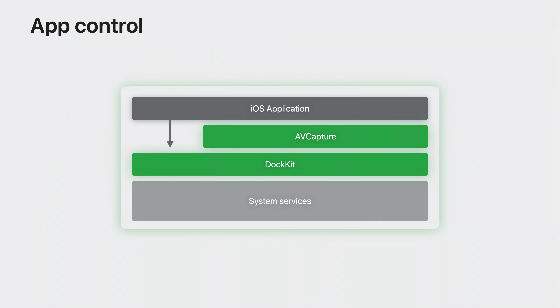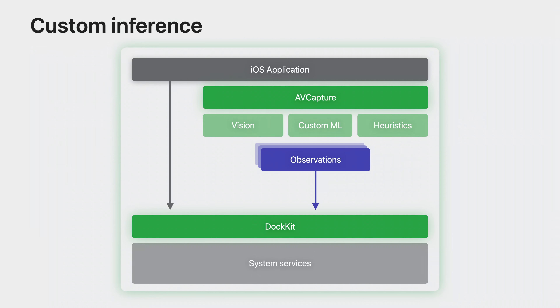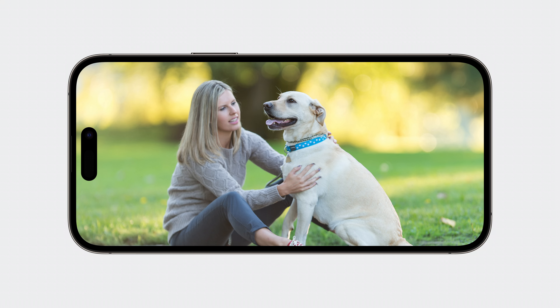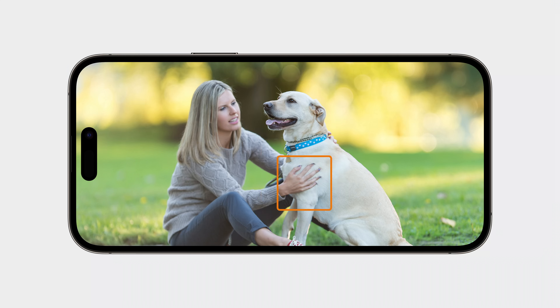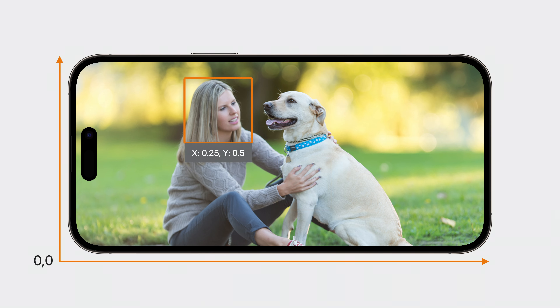That's not all that's possible when your app integrates with Docket. In addition to controlling the motors directly, you can also take control of the inference. You can use the Vision framework, your own custom ML model, or whichever perception algorithm your application needs. From the custom inference output, you construct observations to feed into Docket to track the object. An observation is any rectangular bounding box that represents a subject of interest in the camera frame — what you want to track. It could be a face, an animal, or even a hand. The bounding boxes are defined in normalized coordinates based on the lower left point of origin.